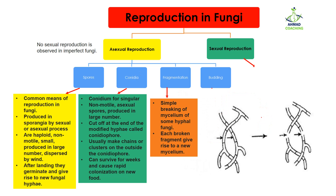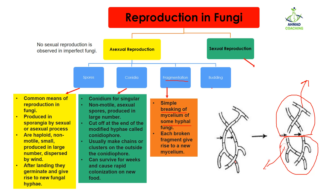The next reproduction method is fragmentation. Fragmentation means the simple breaking of the mycelium of some fungal hyphae. There was one big mycelium and this mycelium is broken down at some places — this process is known as fragmentation. Each broken part of the mycelium gives rise to a new fungus. So from one mycelium, after fragmentation, we can have two or more new fungi. Each broken fragment gives rise to a new mycelium.